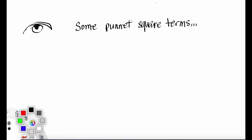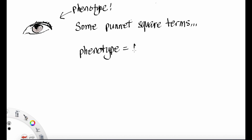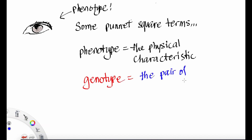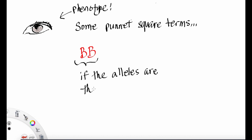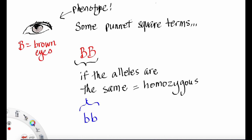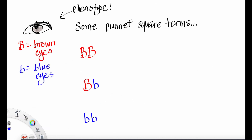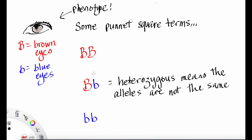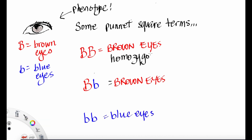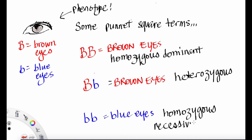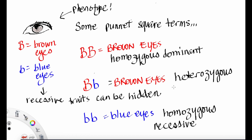Let's look at some Punnett square terms. A phenotype is the physical characteristic, like blue eyes or brown eyes. A genotype is the pair of alleles that code for the phenotype. If the alleles are the same — big B, big B or little b, little b — we call that homozygous. If the alleles are not the same, we call that heterozygous. Big B, big B is brown eyes — homozygous dominant, because brown eyes are dominant over blue eyes. Big B, little b is heterozygous. And little b, little b is homozygous recessive. Blue eyes are called a recessive trait because they can be hidden.